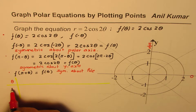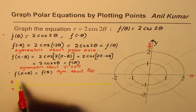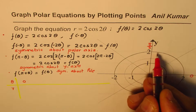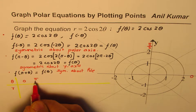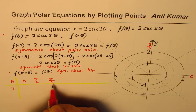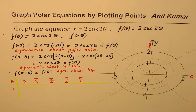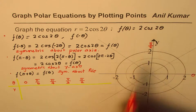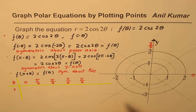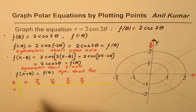We take a few key points to sketch the graph. For r = 2 cos 2θ, we choose θ = 0, π/6, π/4, π/3, and π/2. At θ = 0: r = 2 cos(0) = 2. At θ = π/6: r = 2 cos(π/3) = 1. At θ = π/4: r = 2 cos(π/2) = 0.